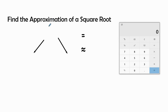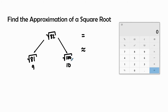Our next radical is going to be radical 82. I know that radical 82 is between 9 and 10, because radical 81 is 9 and radical 100 is 10. What's the distance between 82 and 81? That is 1. And what is the distance between 81 and 100? That's 19. So 1 over 19 would be my fraction, and the approximation would be 9 and 1 nineteenth.